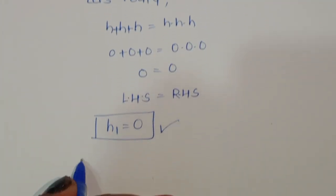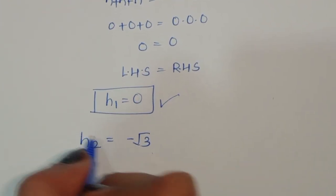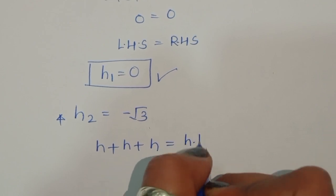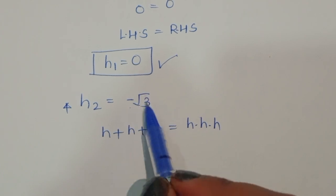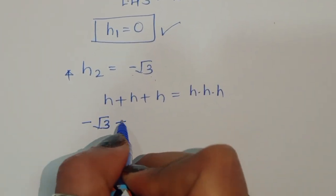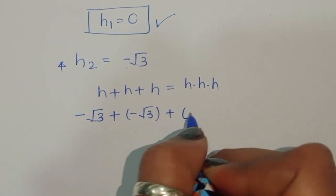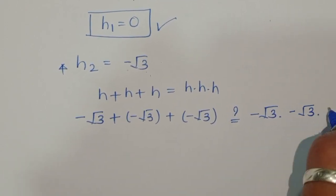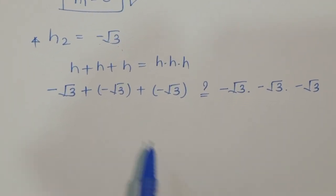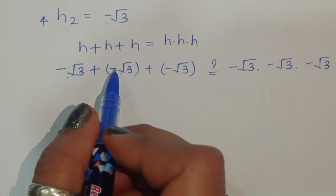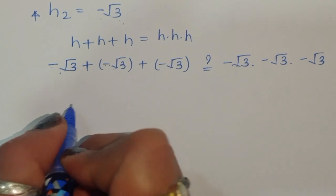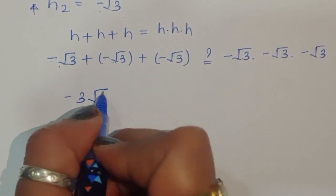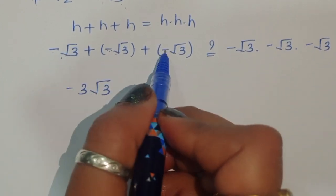Next, verify h equals negative square root of 3. Substituting into the equation: negative square root of 3 plus negative square root of 3 plus negative square root of 3 on the left side gives negative 3 times square root of 3, which equals negative 3 square root of 3.